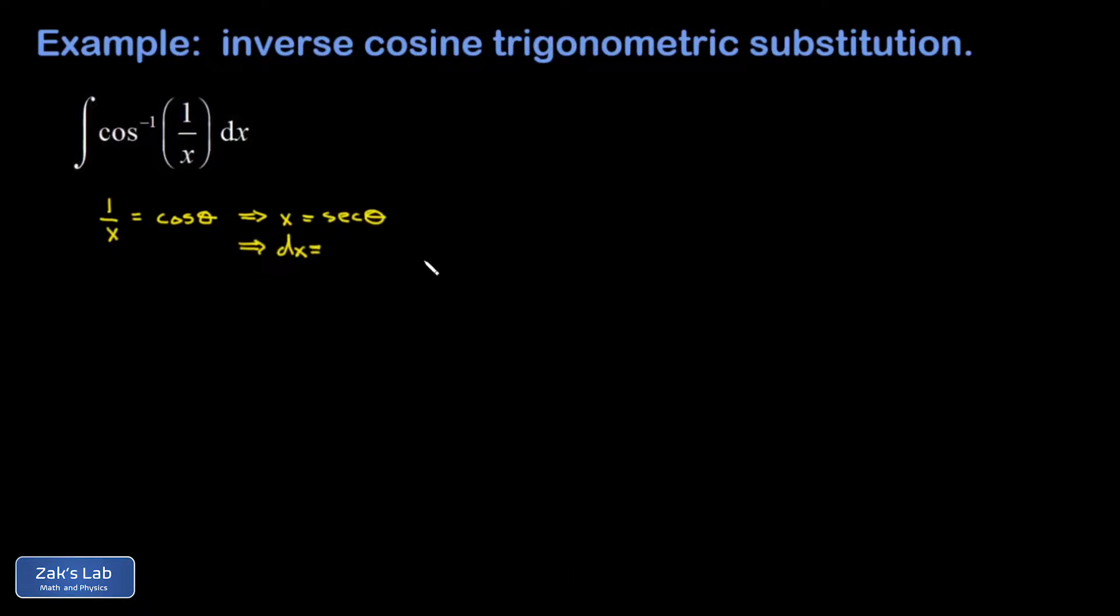And now we can get our differential. The derivative of secant is secant tangent. So dx is secant theta tangent theta d theta. Now we transform our integral to theta space. And the inverse cosine of the cosine of theta, that simplifies to just theta.